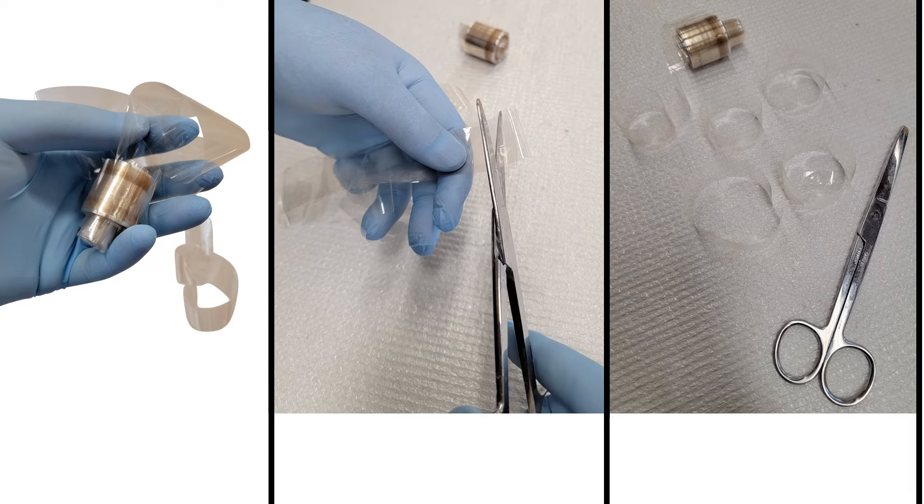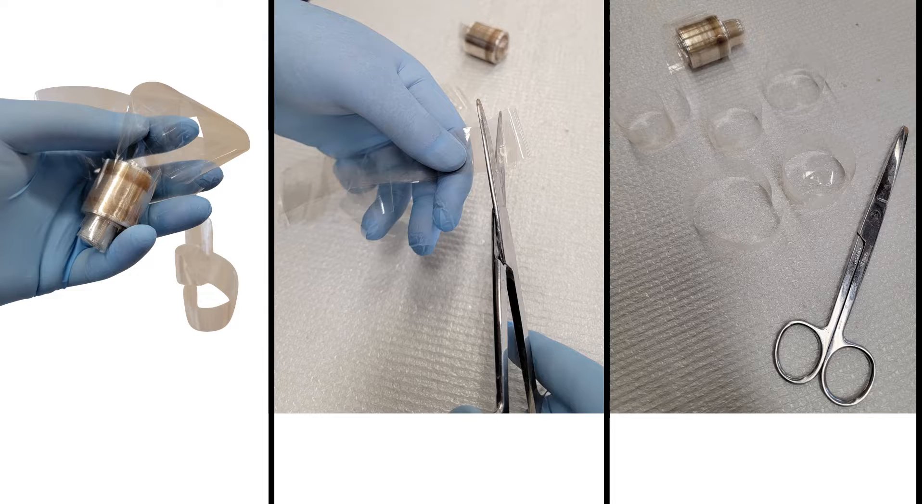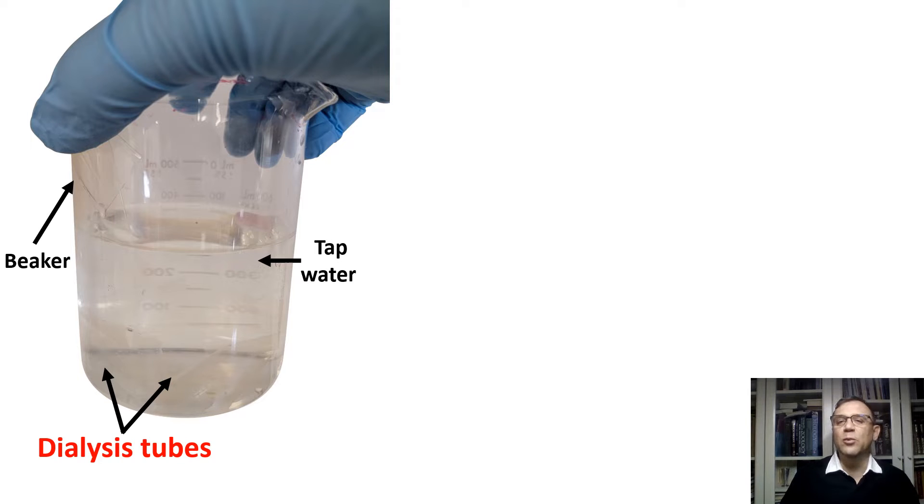We have five dialysis tubes from which we will make dialysis bags. Now we need to submerge all of our bags in tap water at the same time. As you can see on the screen, I have placed them in a beaker. We will need to leave them there for about a minute to soak. This will allow us to open them up and turn them into dialysis bags.